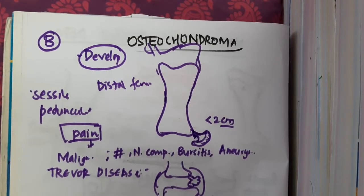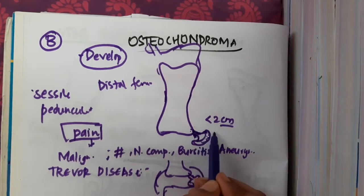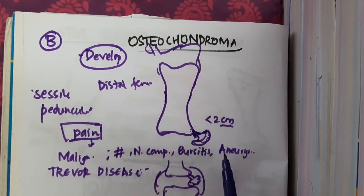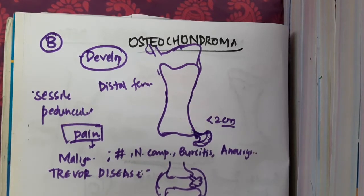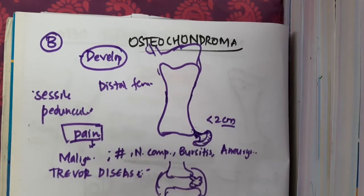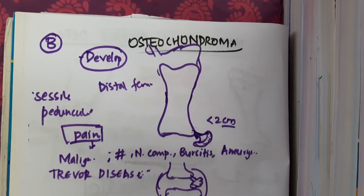Osteochondroma has a cartilaginous cap. Histologically, on biopsy, you will see the presence of cartilaginous tissue.